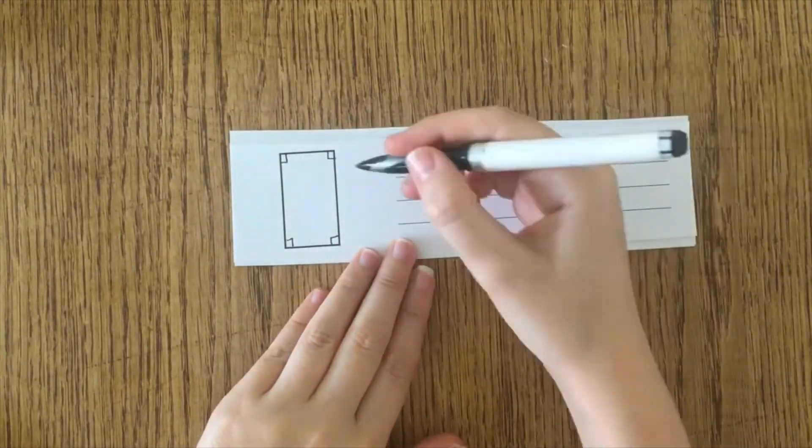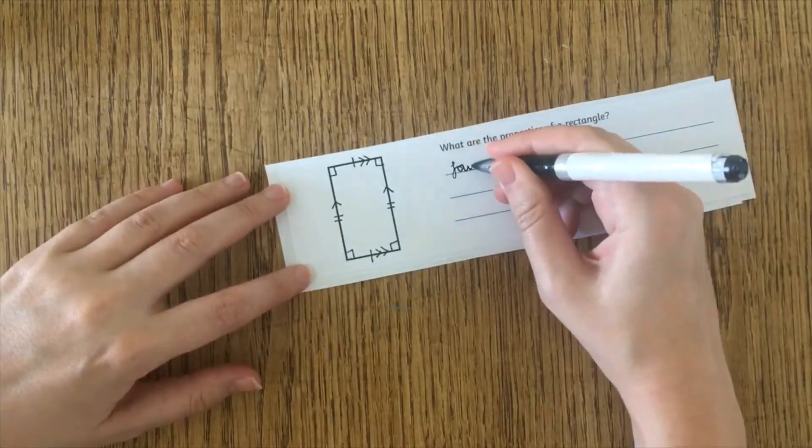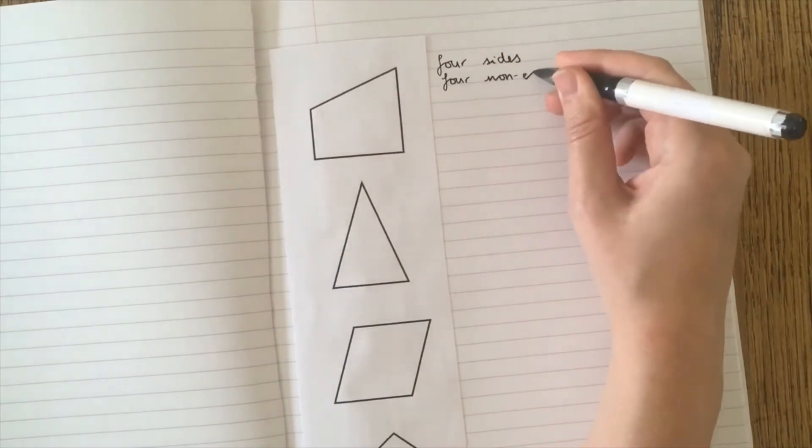This could be completed as an individual, in a pair or as a whole class with each pair given one shape to annotate. You could even make the activity more challenging by cutting off the shape names and leaving just the diagrams.